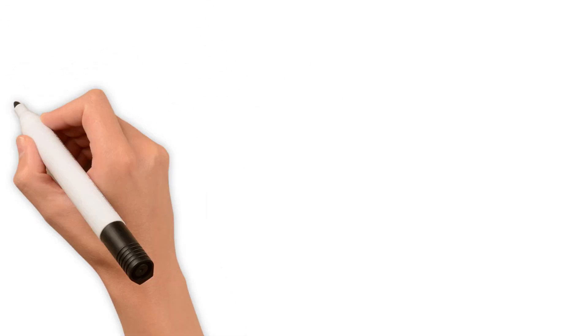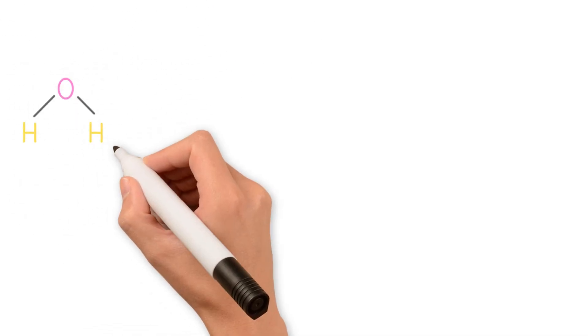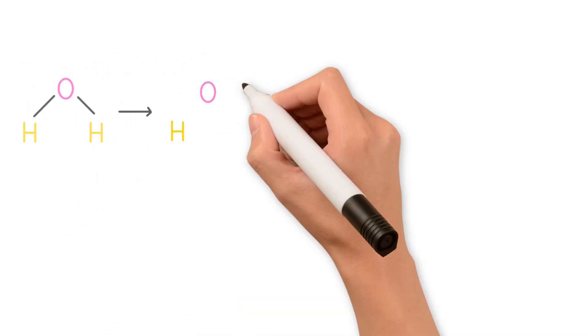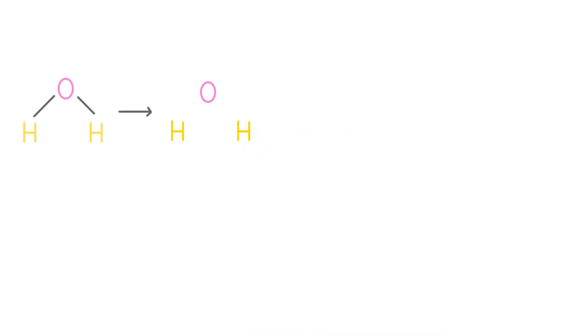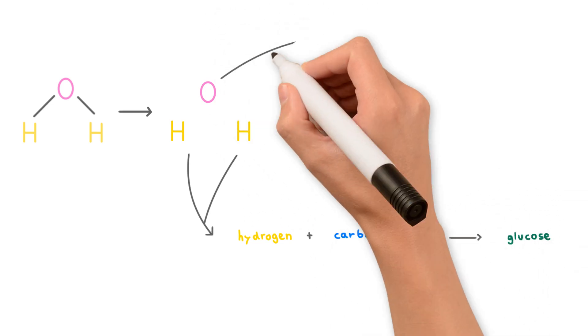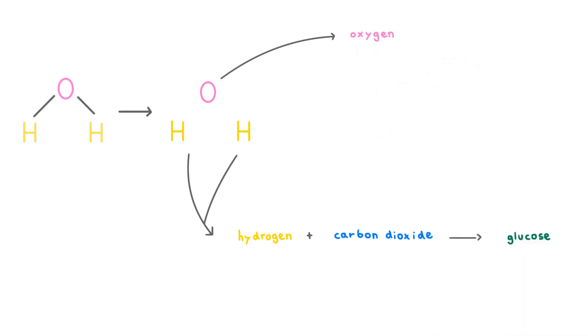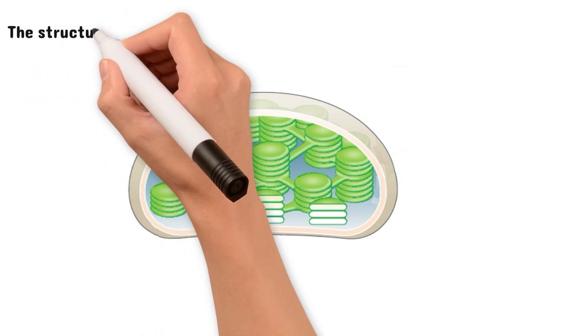First, light energy is used to break the bonds between hydrogen and oxygen in the water molecules. Then the hydrogen molecules which are released combine with carbon dioxide to make glucose, and the oxygen that's left over from the water molecules is released by itself as a waste product.